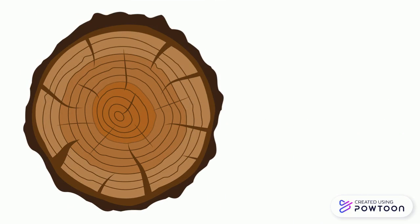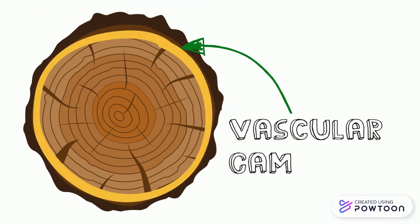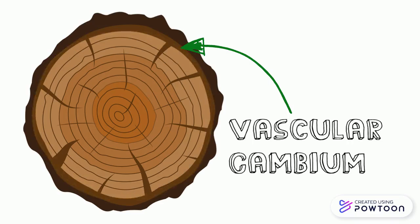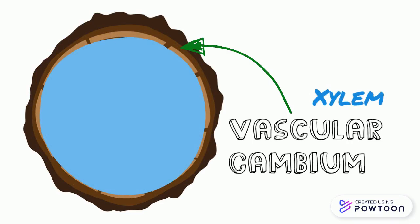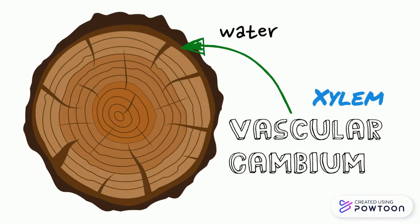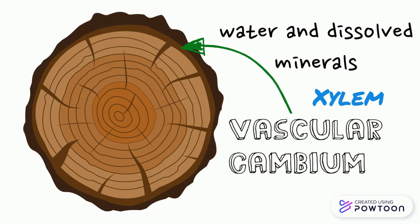Working our way inward from the phloem is a thin layer called the vascular cambium. The vascular cambium is responsible for separating the phloem and the xylem. Xylem is another vascular tissue which is responsible for the transport of water and dissolved minerals to the roots. This is involved with secondary growth of the tree, which is an increase in the girth and wideness.